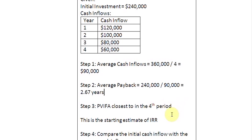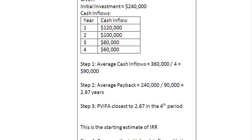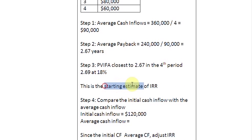Step three would be to find out the present value interest factor of the annuity closest to 2.67. We go to the PVIFA table and look into the row for the fourth period, because we have four years in question. We find a factor of 2.69, which is very close to 2.67, and the corresponding interest rate is 18%. This becomes our starting estimate of the internal rate of return.